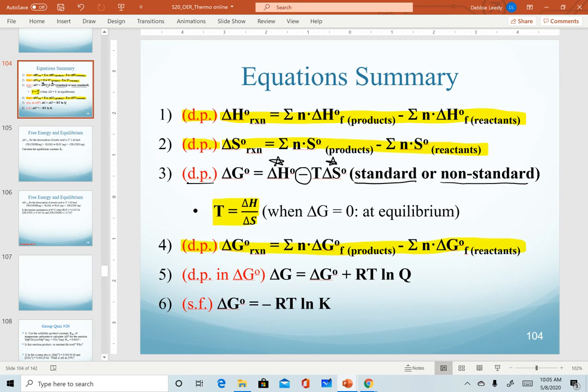Our last two equations, number five is the one where we're using our standard delta G to calculate the non-standard delta G. Since our last step is addition, we're going to report our sig figs for non-standard delta G by looking at the number of decimal places in the standard delta G. Our very last equation is relating our equilibrium constant to our standard delta G. Since we are using multiplication, we're just going to go by sig figs.